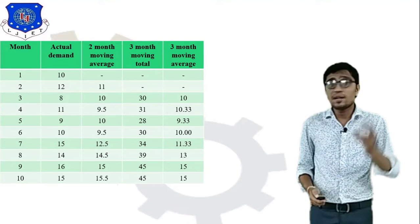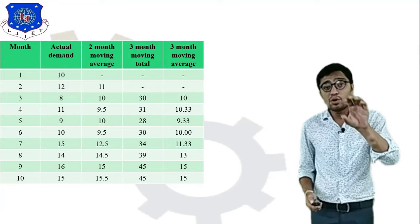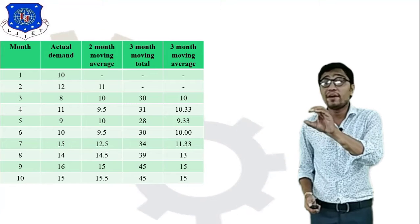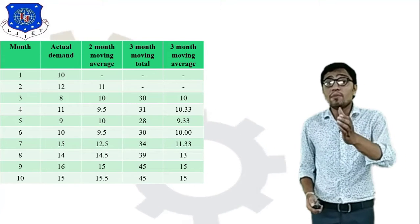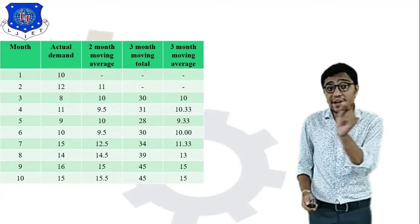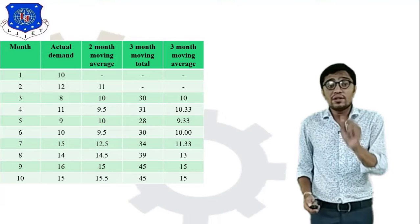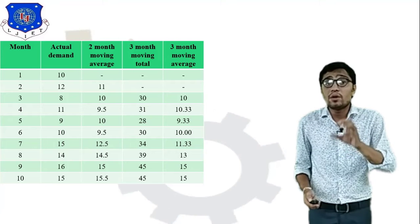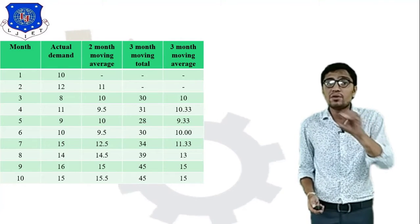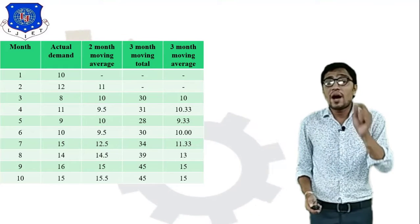To find the two-month moving average, take the first two months. In month 1 the quantity is 10, in month 2 it is 12. So 10 + 12 = 22, divided by 2 = 11. In month 1 we put a dash. In month 2 the two-month moving average is 11. For month 3, take months 2 and 3: 12 + 8 = 20, divided by 2 = 10.